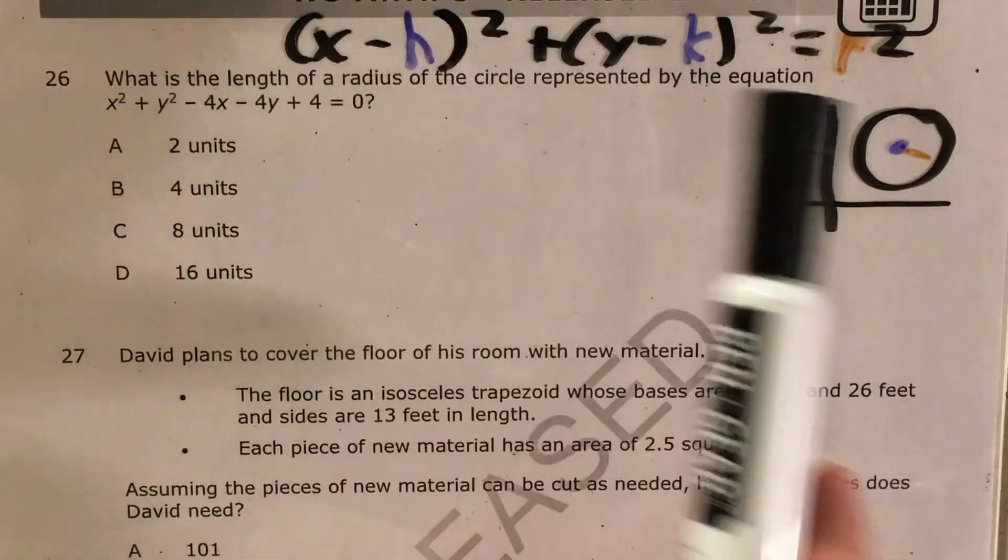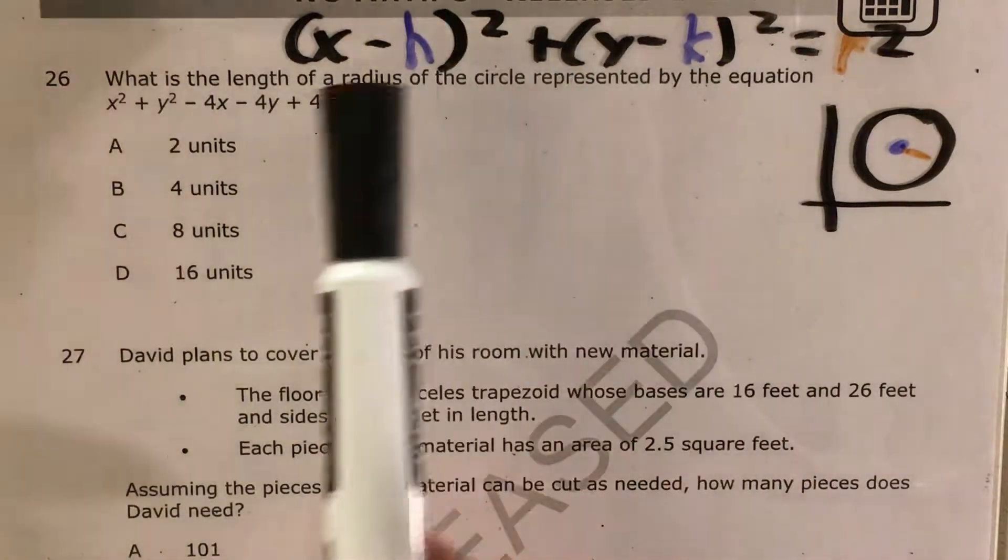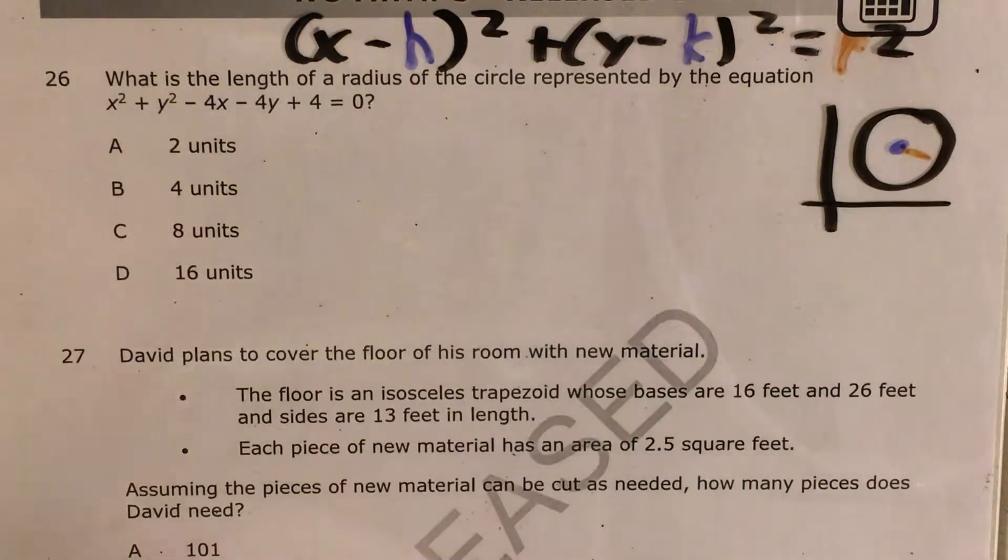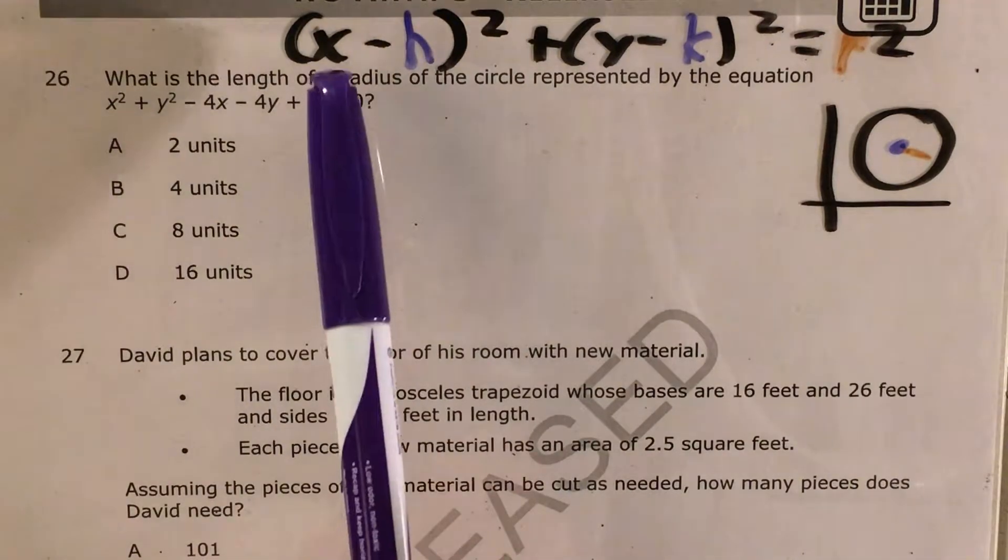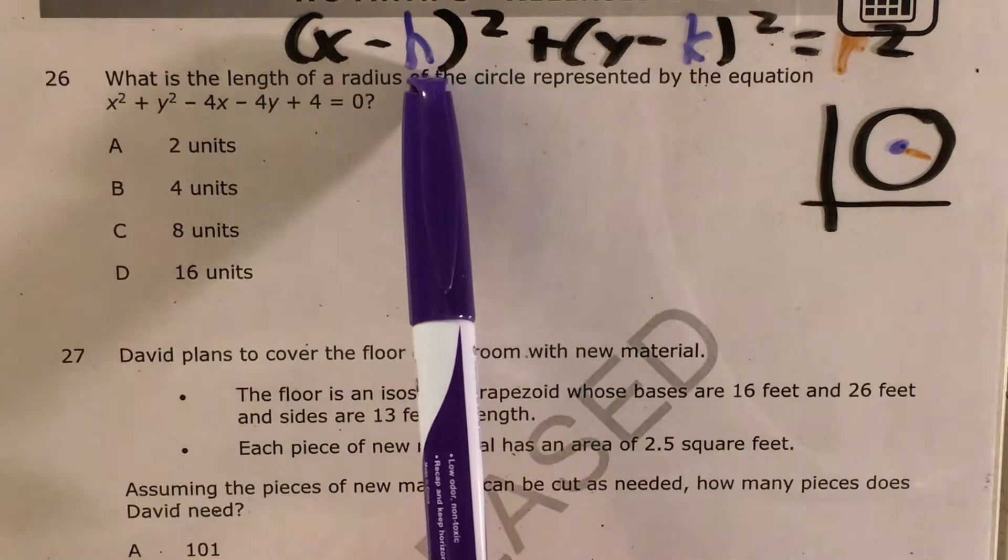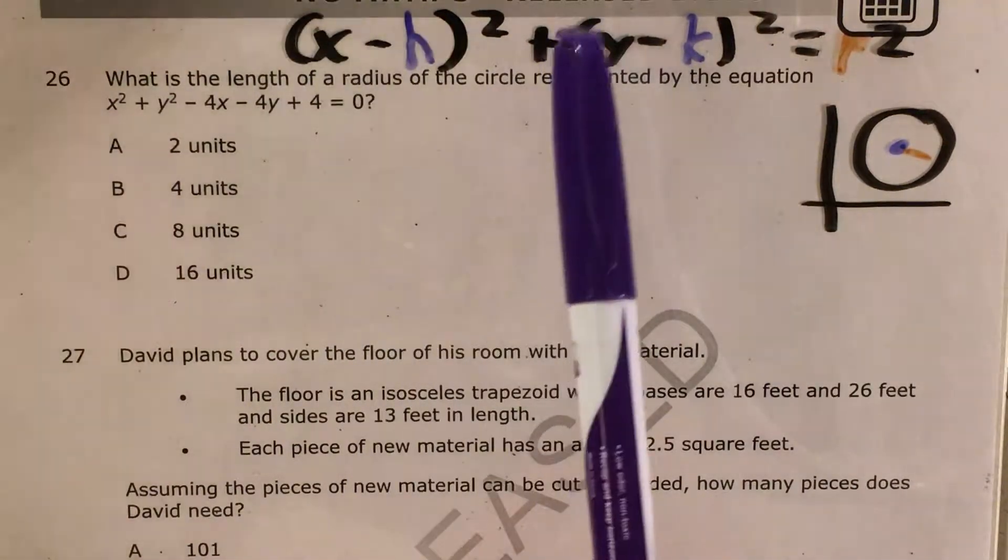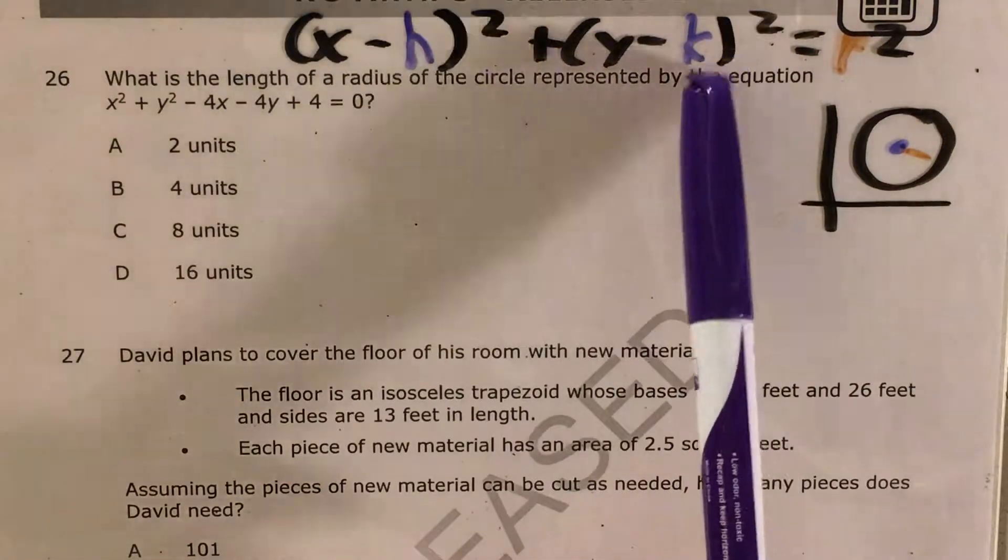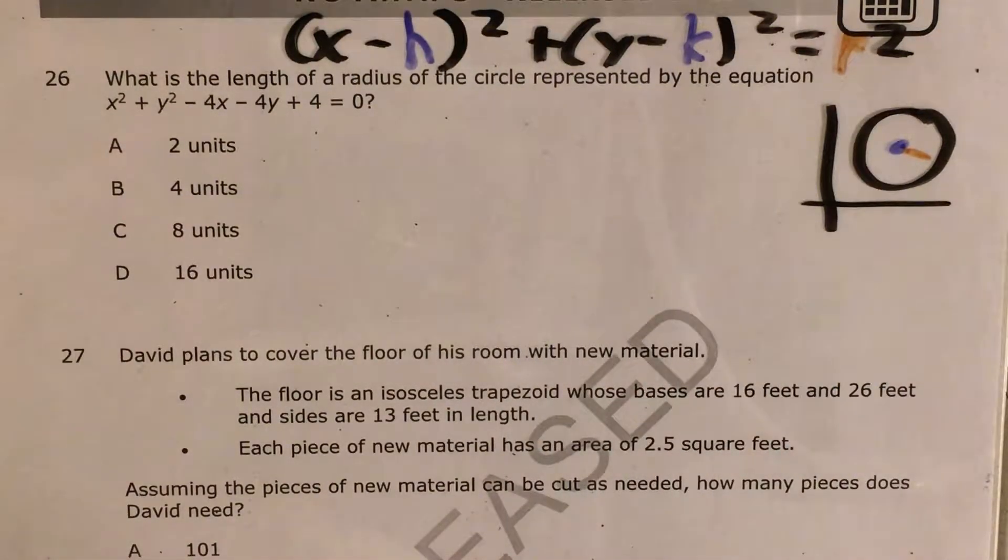So let's first talk about what all this means. This is the formula for a circle as we would write it in the coordinate plane. It's x minus the x-coordinate of our circle's center all squared plus y minus the y-coordinate of our circle's center all squared equals the radius squared. Very similar to the Pythagorean theorem.